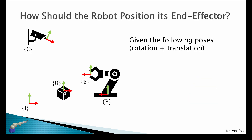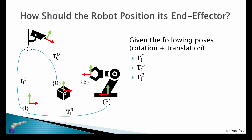So here's a problem scenario. How should the robot position its end effector? We have an environment with different actors: a camera, an object, a robot arm, and our reference frame or the inertial frame. Given the following poses — that is a combination of rotation and translation — we have our pose from inertial to camera, pose from camera to object, pose from inertial to base, and our pose from base to end effector. Then what is the pose from the end effector to the object?